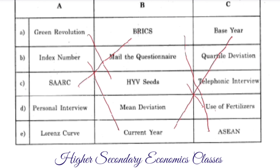That's all. Now the personal interview. The Lorenz Curve, Mean Deviation, and Quartile Deviation — what chapter do these belong to? These belong to the Dispersion chapter.